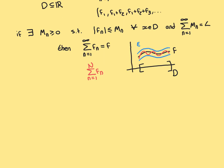I've drawn a picture here to help us understand what we need to prove. Here is the domain D, and there is our limit function in black, f. If we're going to prove that this series of functions converges uniformly to f, then I need to show that whatever epsilon you take, you can draw the epsilon interval around your limit function f — shown here in blue — this tube. This is the line above f by an amount epsilon, and this is the line below f by an amount epsilon.